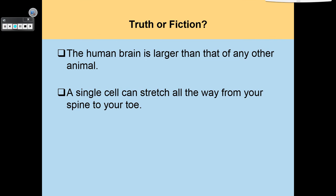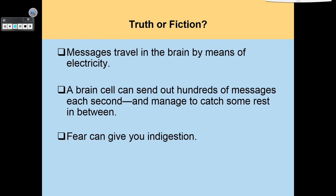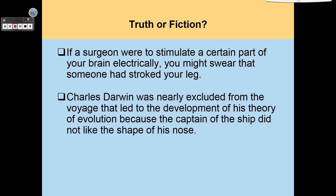True or false? The human brain is larger than that of any other animal — that is actually false. A single cell can stretch all the way from your spine to your toe — also false. Messages travel in the brain by means of electricity — true. A brain cell can send out hundreds of messages each second and manage to catch some rest in between — also true. Fear can give you indigestion — true. If a surgeon were to stimulate a certain part of your brain electrically, you might swear that someone had stroked your leg — true. Charles Darwin was nearly excluded from the voyage that led to the development of his theory of evolution because the captain of the ship did not like the shape of his nose — also true.